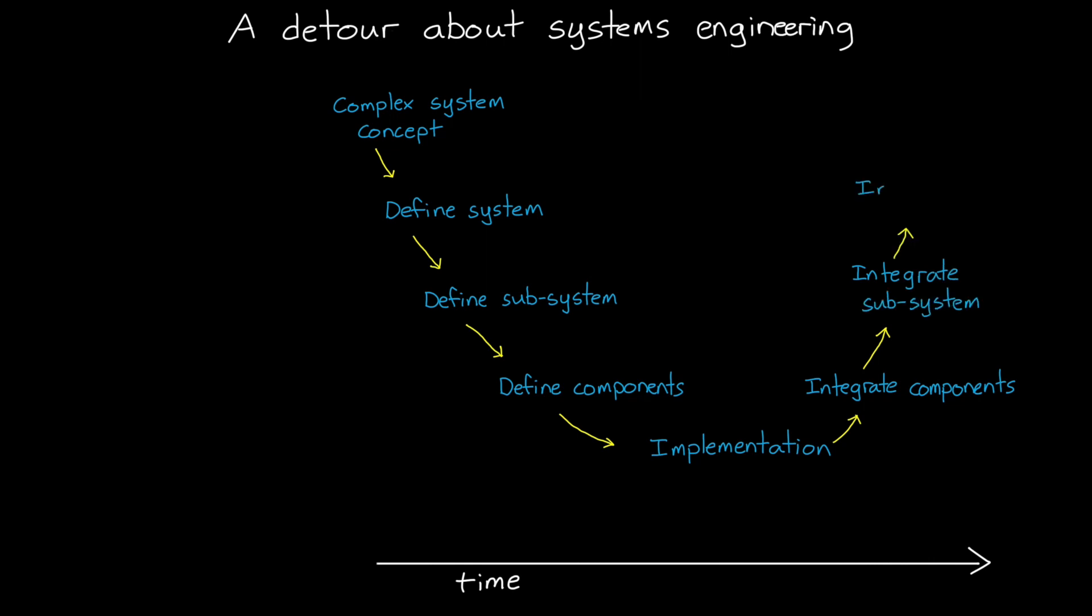And then once you have a sufficiently defined set of low level components, you start implementing the design and building it up. Components build into subsystems. Subsystems build into the system. And at each level, you're verifying that the implementation meets the requirements that were specified during the definition process. This is the so-called systems engineering V model, at least a very fast introduction to it.